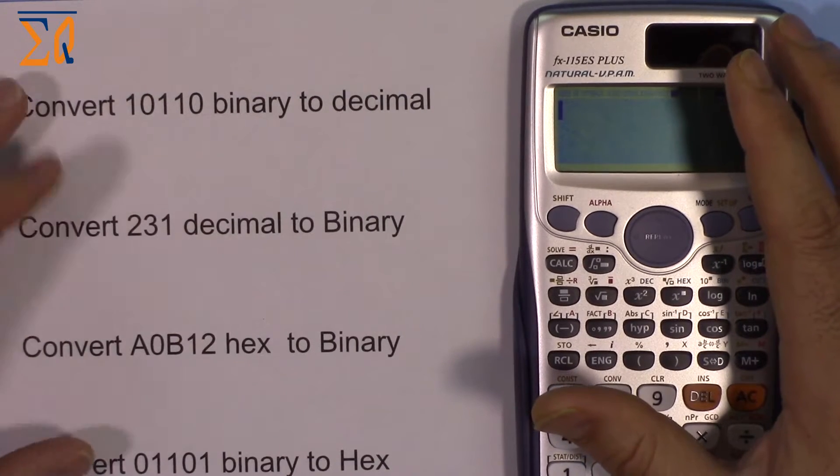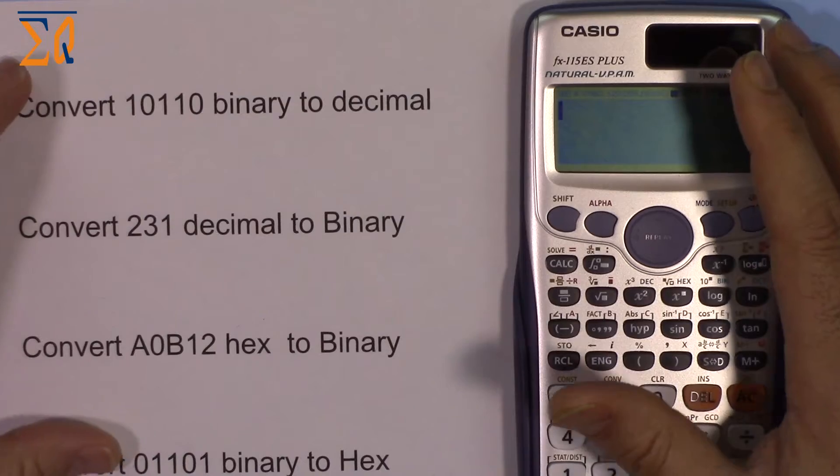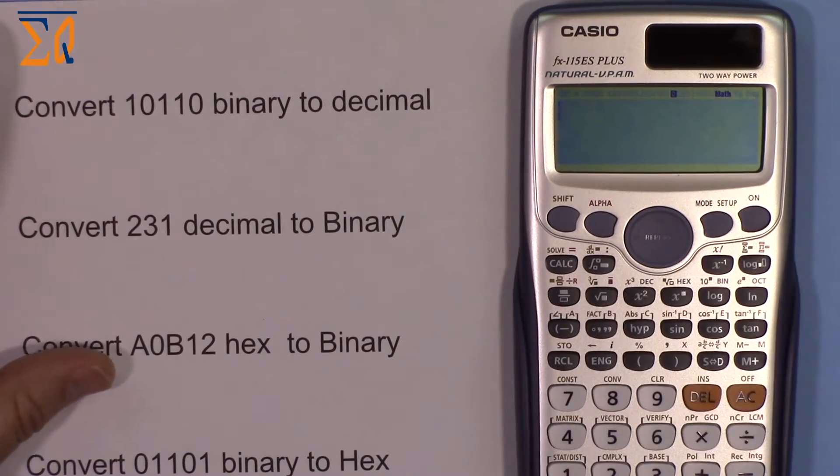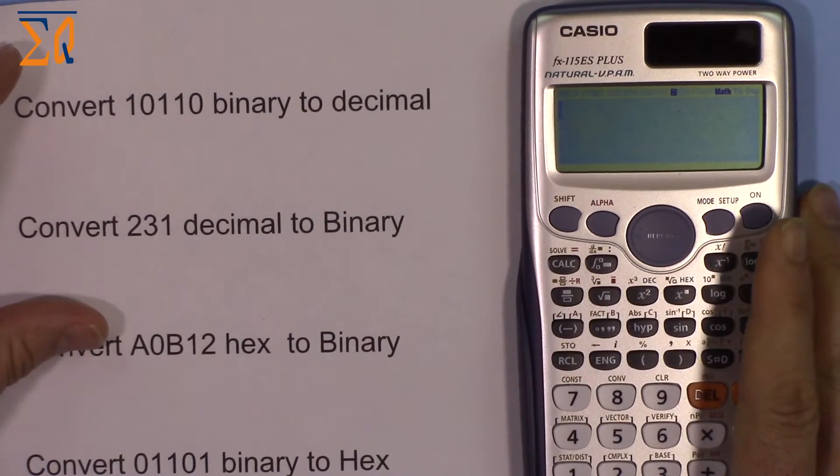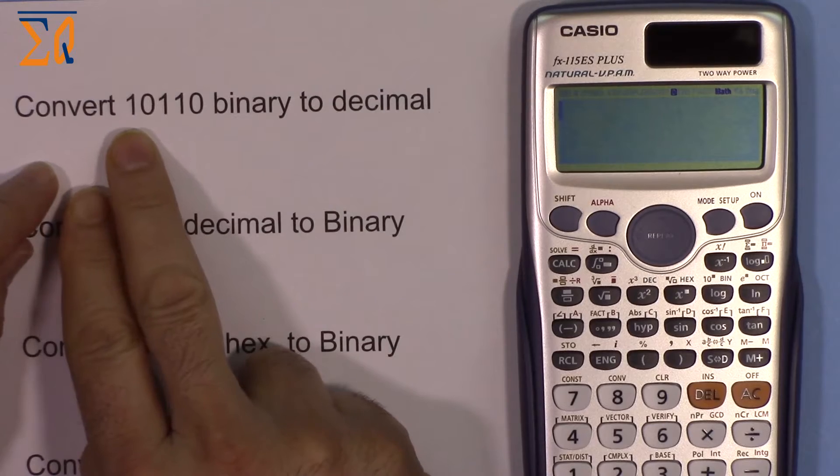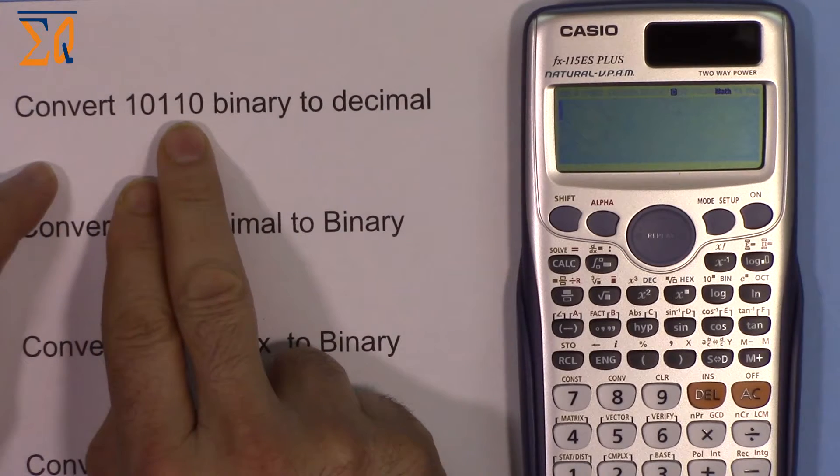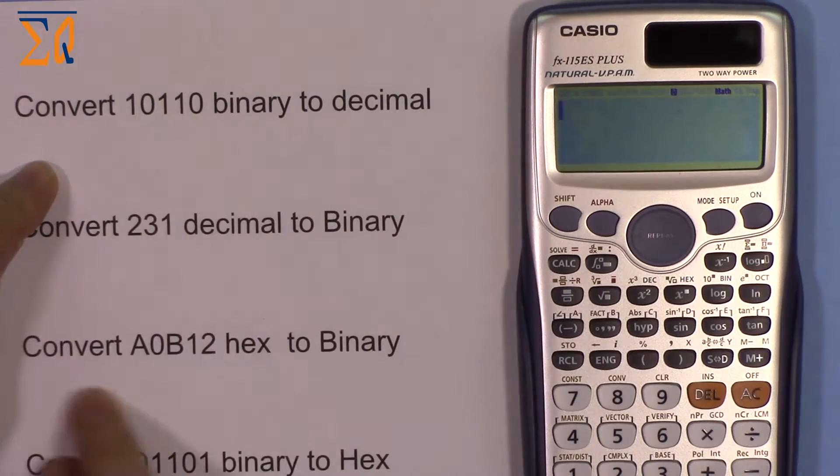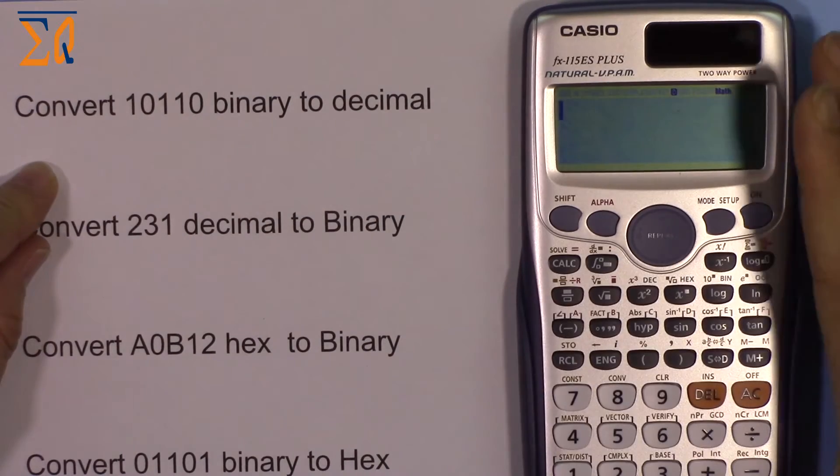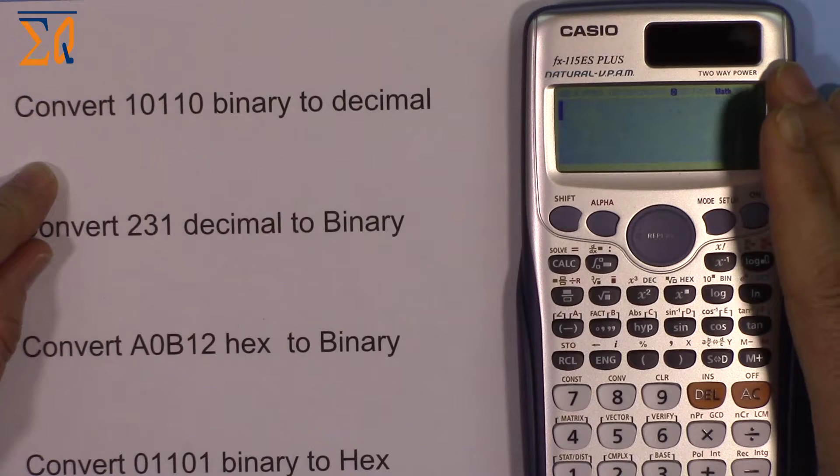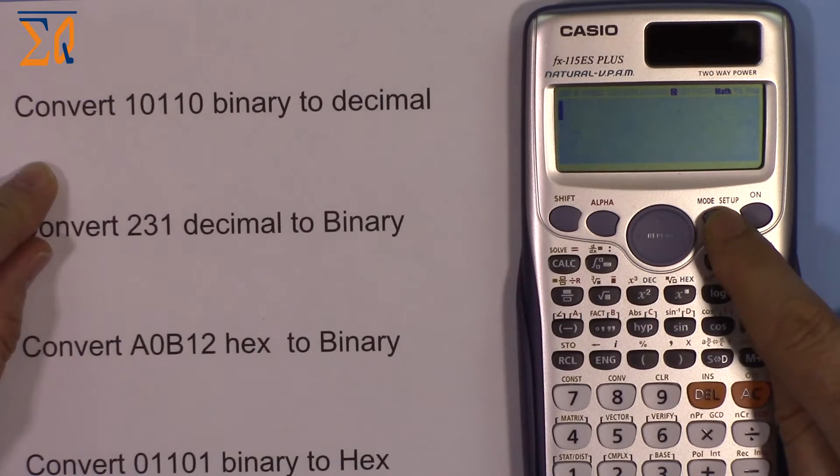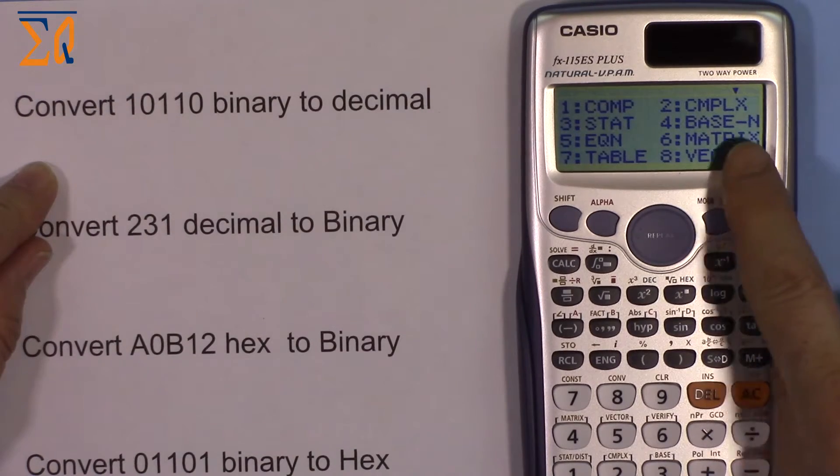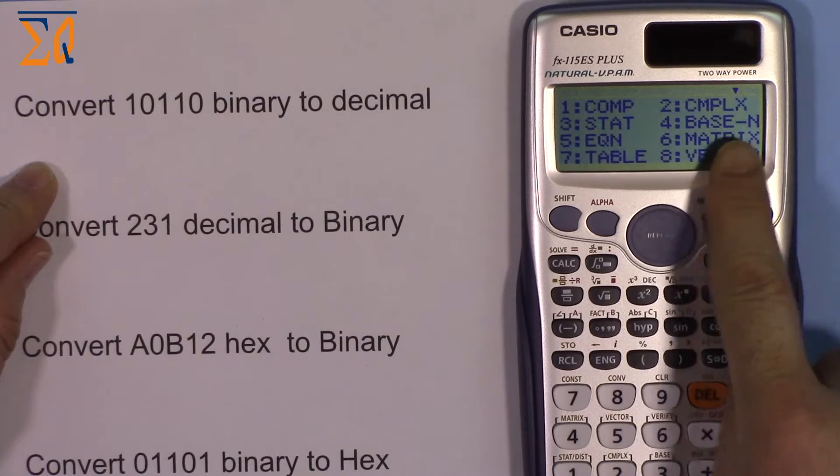We'll work with binary, decimal, hexadecimal, and octal conversions. To convert 10110 binary to decimal, we need to put the calculator in base mode. Press the mode button, then press 4 for base-n. Now we're in decimal mode.